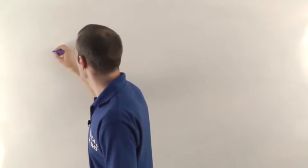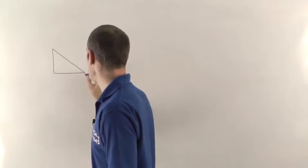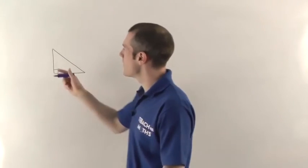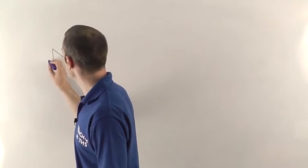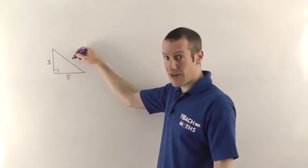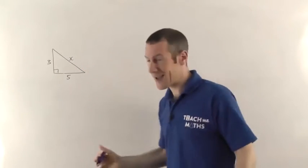All right, so first problem, we've got a right angle triangle as always. This is just going to be a very simple problem just to get us going in the first place. So imagine the length of this side is 3 and the length of this side is 5 and we want to find out the length of the hypotenuse, the longest side. They usually like to call it X.